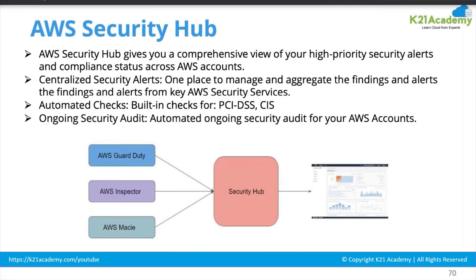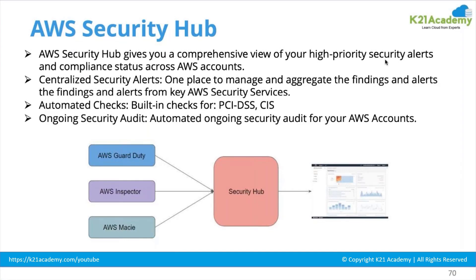AWS Security Hub gives you a comprehensive view of your high-priority security alerts and compliance status across your AWS account. For compliance we go to AWS Config, and for security rules we go to Inspector or GuardDuty. Security Hub gives you a comprehensive view of high-priority security alerts — because not all security threats may be a priority — and compliance data across your AWS account.